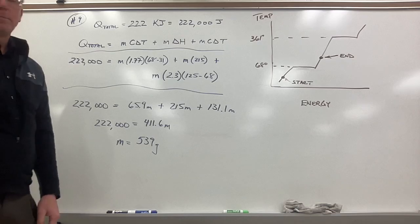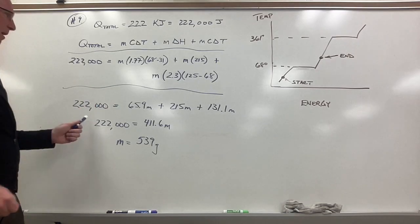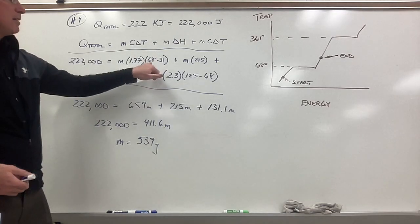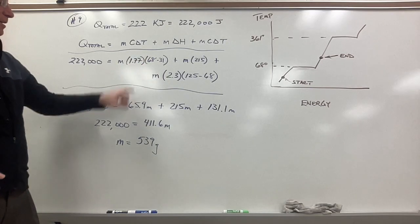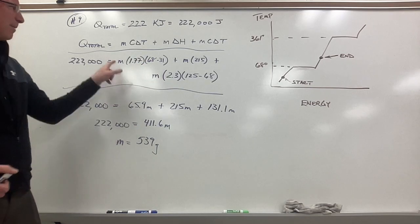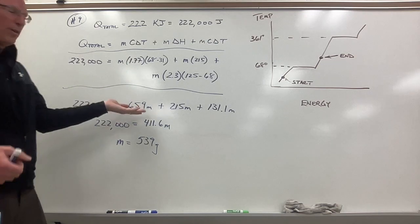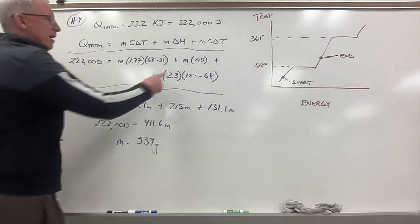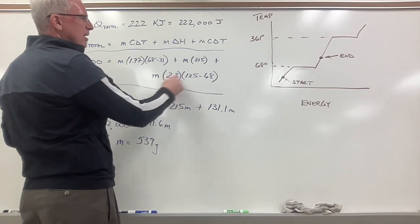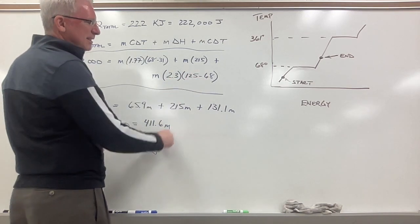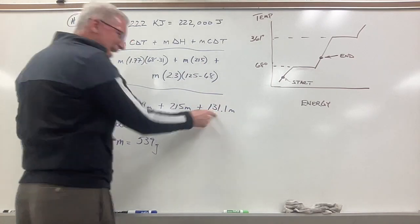Doesn't look solvable, but if you keep going, if you multiply, this would be 37 times 1.77, you'll get 65.9 times M, which we don't know M but that's okay. 215 times M is just 215M, and if you multiply 2.3 times 125 minus 68, you'll get 131M.